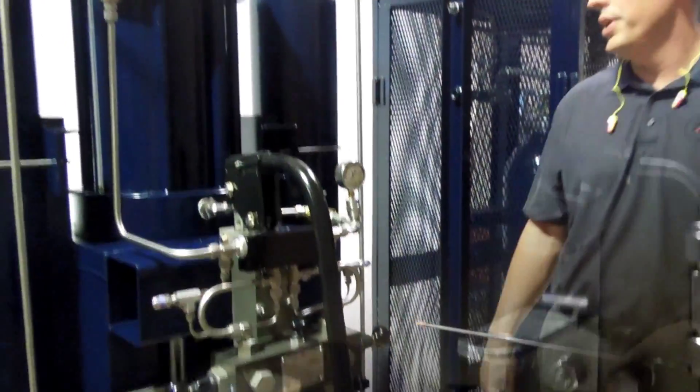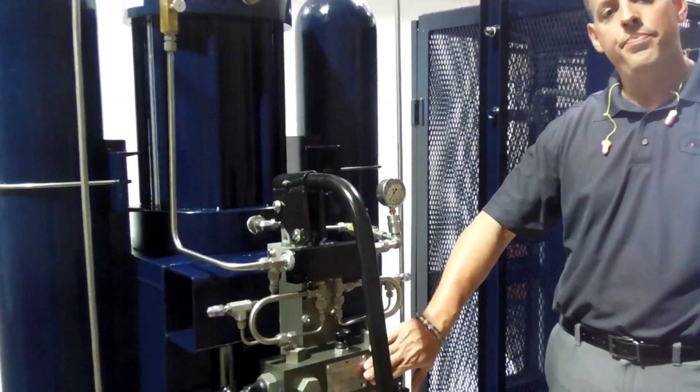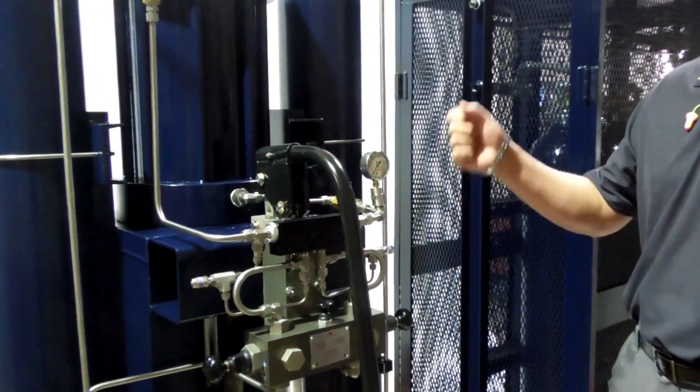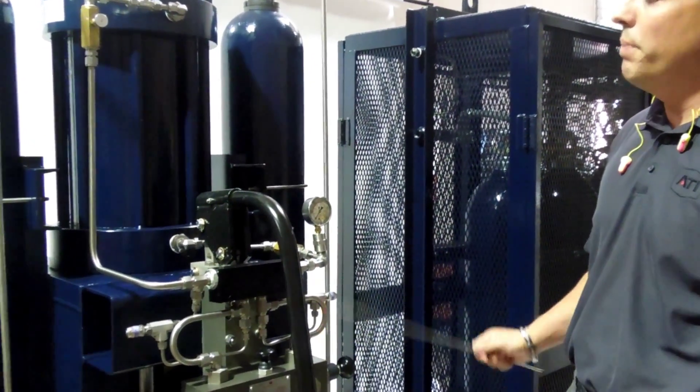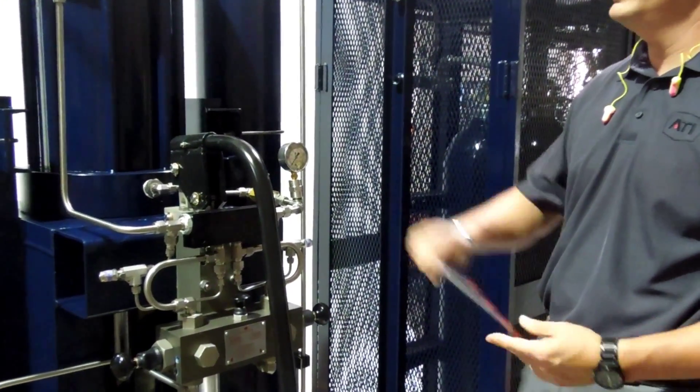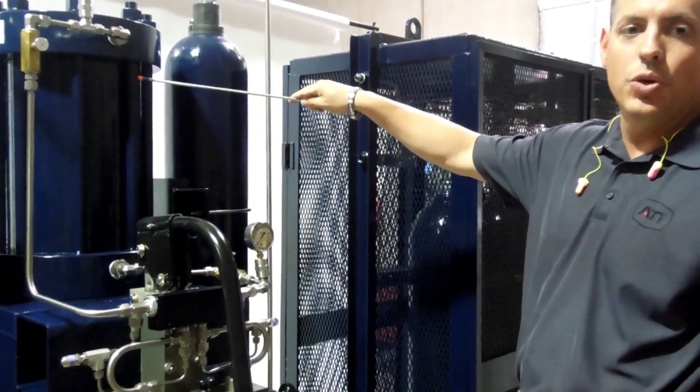The third option to open and close the valve is going to be our manual override, which is our hand pump right here. It strictly opens and closes the valve based on pumping the hydraulic fluid. Gas is not involved in this operation. It's basically just going to be pumping the hydraulic fluid from the top or the bottom, whichever way you want. It'll go from the top if you want it to be closed. It'll come from the bottom if you want the valve to open.